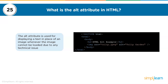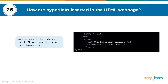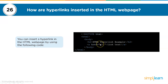The twenty-sixth question: how are hyperlinks inserted in an HTML web page? You can insert a hyperlink using the anchor tag along with href, and inside that tag you can place the URL to which you want your users to be redirected. The code example is shown on the right side of the screen.